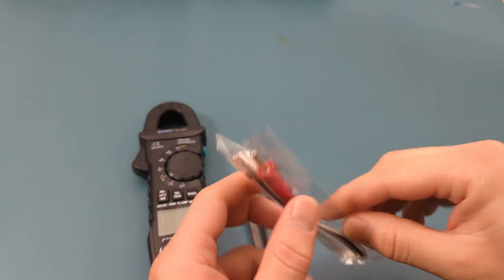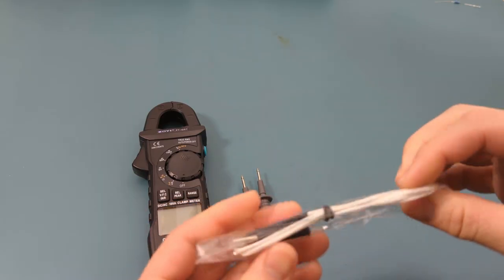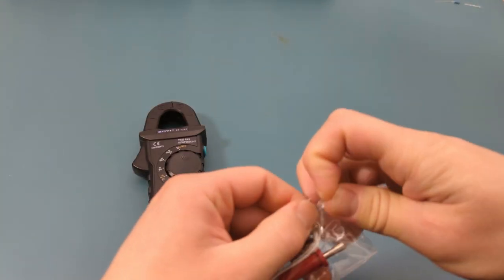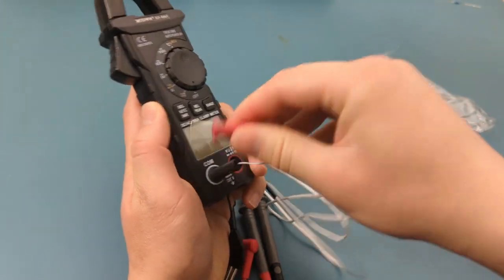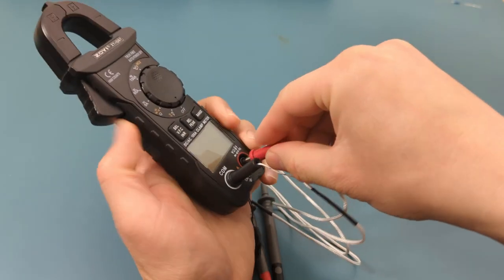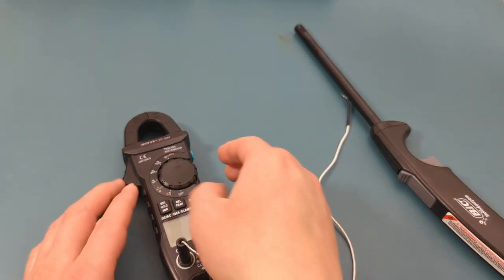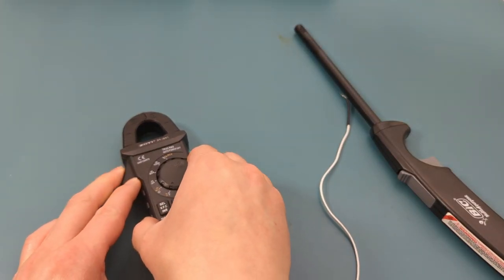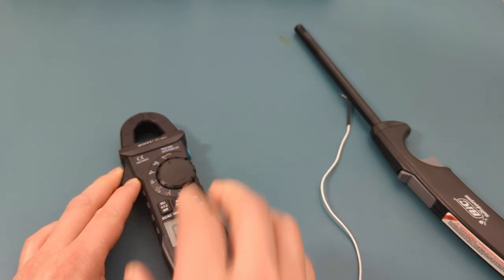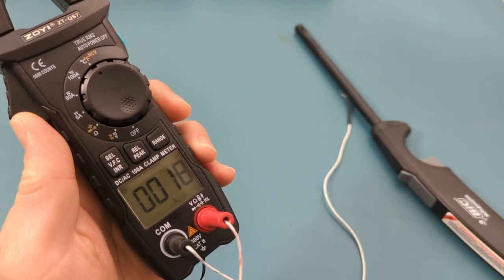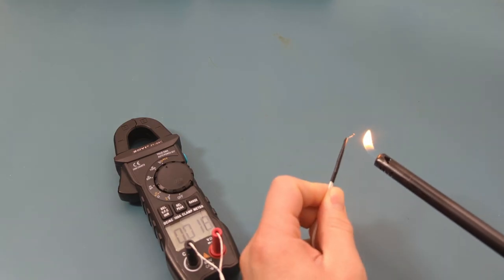The next test is to measure the temperature using the thermocouple. Insert the black plug into the COM port. Insert the red plug into the voltage resistance port. Turn the dial to the temperature setting. The reading currently shows the temperature in Celsius. When the fire is placed under the tip of the thermocouple, the temperature rises.